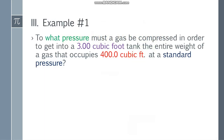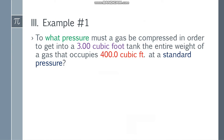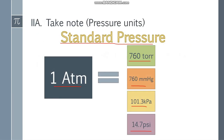Now let's have the first example. To what pressure must a gas be compressed in order to get into a 3.00 cubic foot tank the entire weight of the gas that occupies 400.0 cubic feet at standard pressure? So our initial pressure will be 1.00 atm — it can also be 760 torr or 760 mmHg. I choose 1 atm because it's easy to divide and multiply.